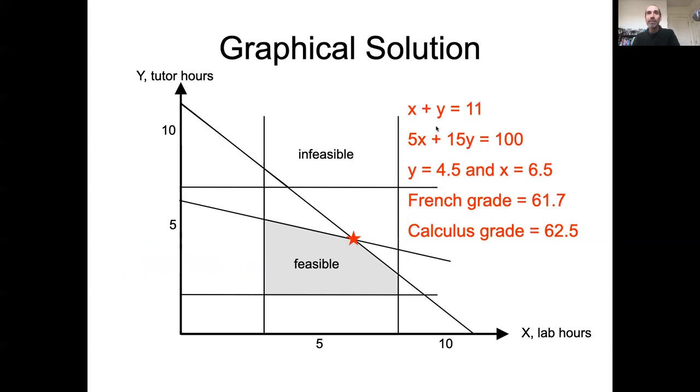So that particular value turns out to be one where you spend four and a half hours in math, studying math, six and a half hours studying French and managed to get a 61.7 in French and a 62.5 in calc.